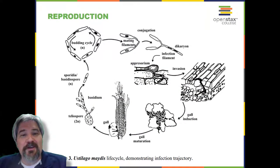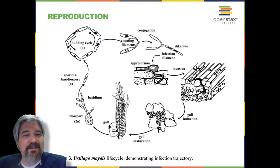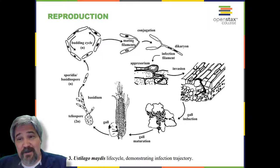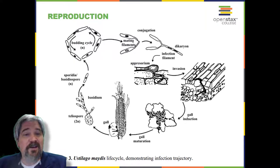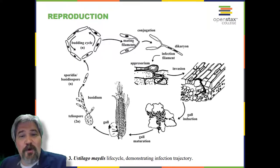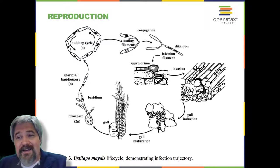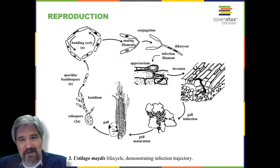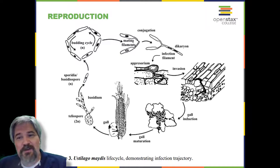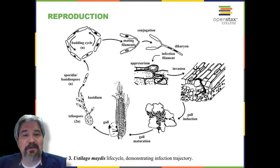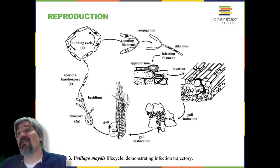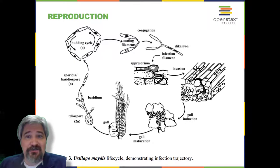Reproduction: single-celled organisms reproduce by first duplicating their DNA, which is the genetic material, and then dividing it equally as the cell prepares to divide to form two new cells. Many multicellular organisms produce specialized reproductive cells that will form a new individual. When reproduction occurs, DNA containing genes is passed along to an organism's offspring. These genes are the reason that offspring will belong to the same species and have characteristics similar to the parent, such as fur color and blood type. Pictured here is the life cycle of the corn smut Ustilago maydis.